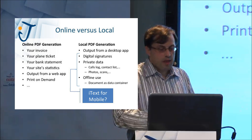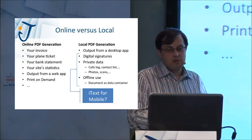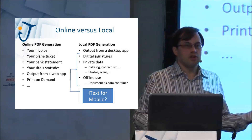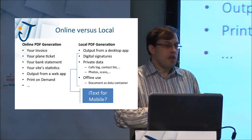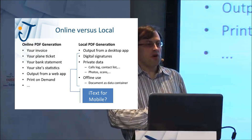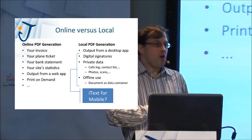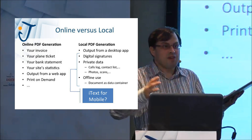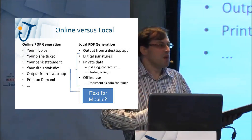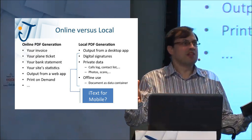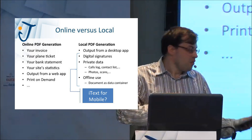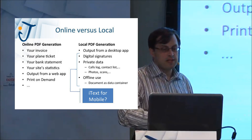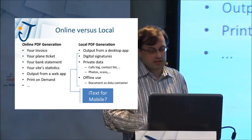Offline use — another thing where you'd want to use iText: suppose you're a salesman going from customer to customer, and they book orders with you, and you want to fill out a purchase order and maybe sign it. What happens if you are offline? It happens to me — when I go to Brussels, for instance, I depend on my phone to find my way, and then suddenly I don't have a connection and I'm totally lost. So what we could use iText for is to fill out forms on a tablet, save them as PDF, and use the document as a data container.